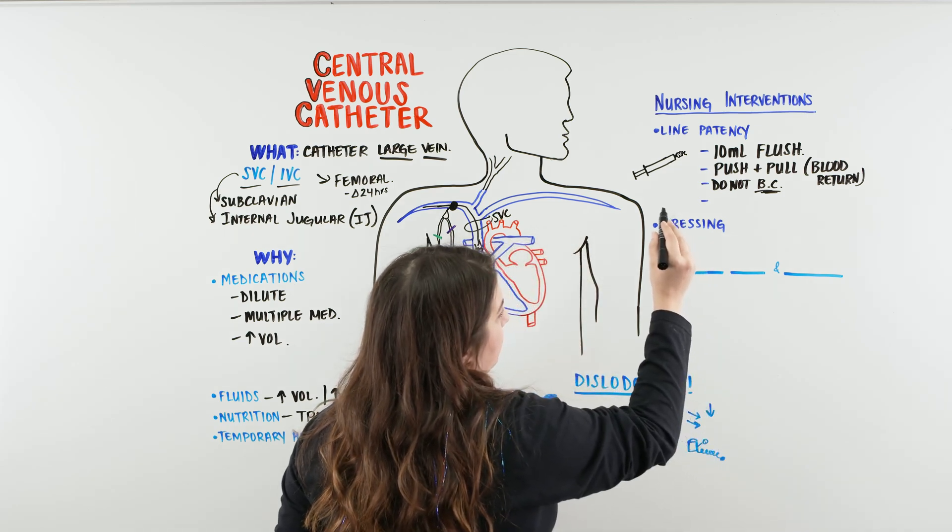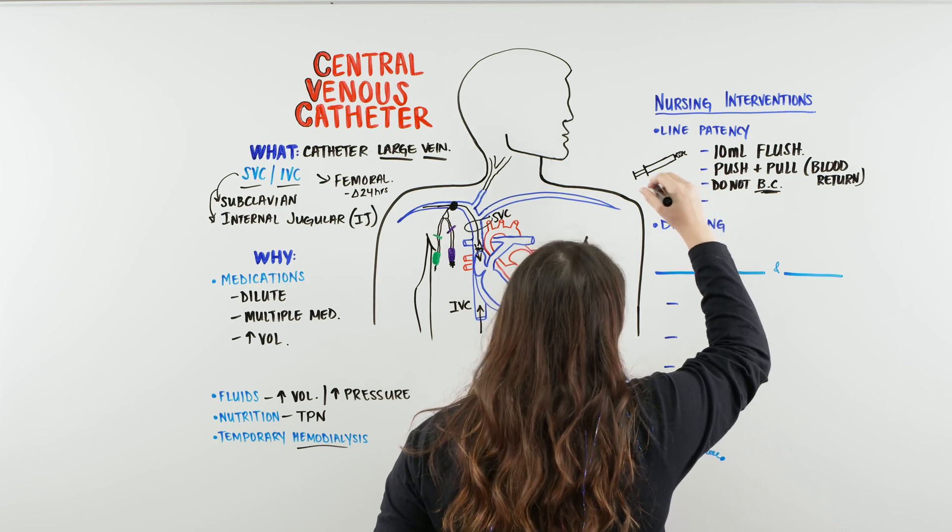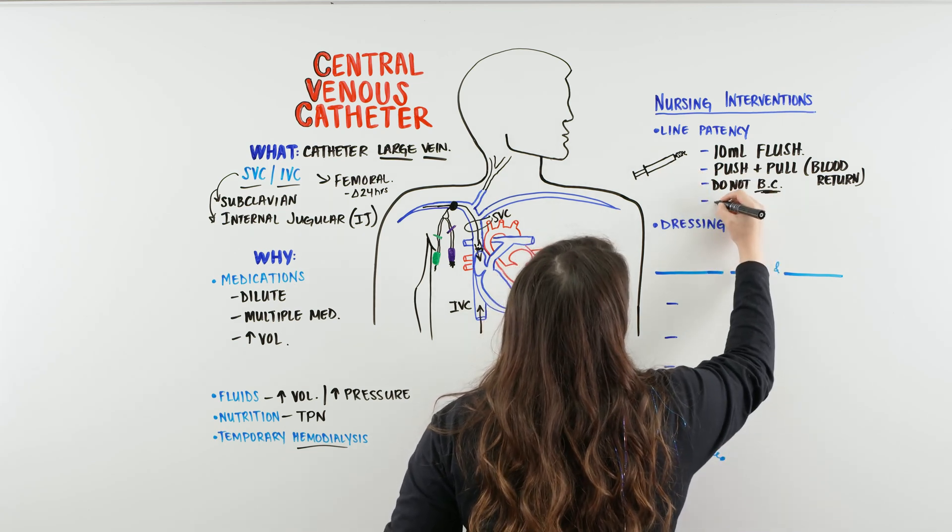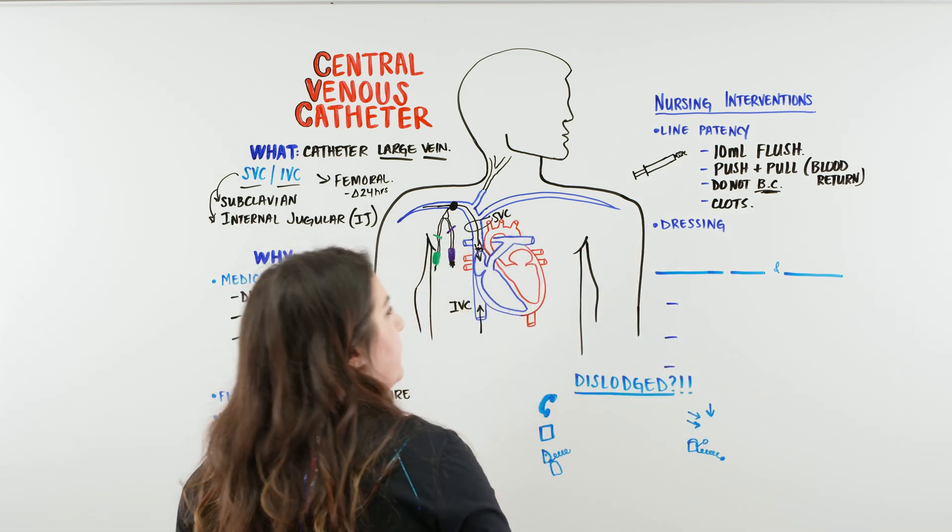So we're going to be flushing. We're going to not pull the blood cultures. We're going to make sure that it's clean and clear and we want to just make sure that there's no clots, right? So we're just going to make sure we're flushing through, making sure our patency sees nice good flow.